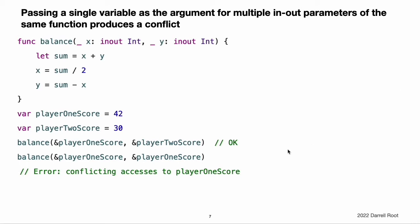Here is an example. The balance function here modifies its two parameters to divide the total value evenly between them. Calling it with playerOneScore and playerTwoScore as arguments does not produce a conflict — they are two write accesses that overlap in time, but they access different locations in memory. In contrast, passing playerOneScore as the value for both parameters produces a conflict because it tries to perform two write accesses to the same location in memory at the same time.